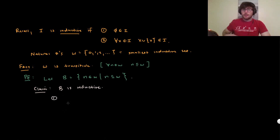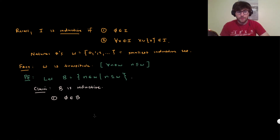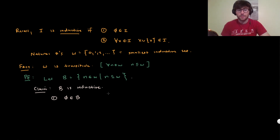By definition, the first thing we need to check is that the empty set is in B. Why is this true? Well, the empty set is in B because the empty set is in omega — since omega is inductive — and also the empty set is a subset of everything.